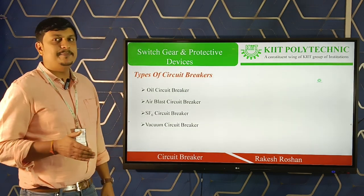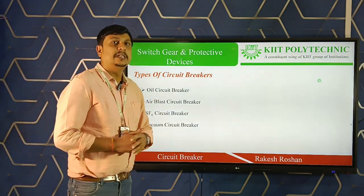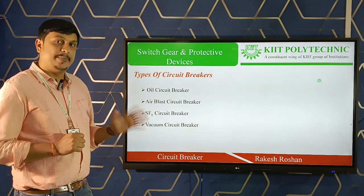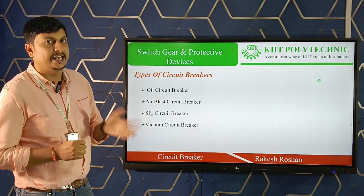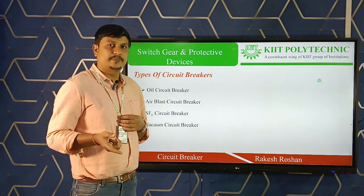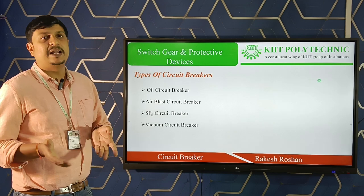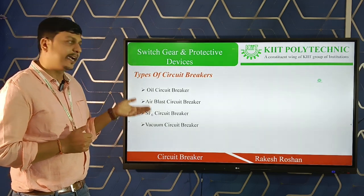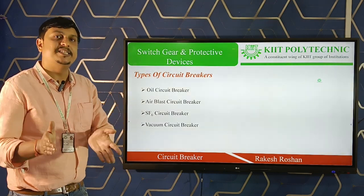Types of circuit breakers: since arc quenching is of great importance, circuit breakers are classified on the basis of their arc quenching medium into four types — oil circuit breaker, sulfur hexafluoride (SF6) circuit breaker, vacuum circuit breaker, and air blast circuit breaker. Oil, SF6, and vacuum are all arc quenching media.